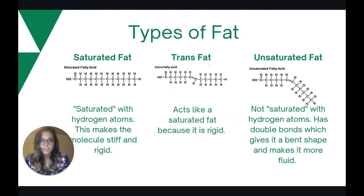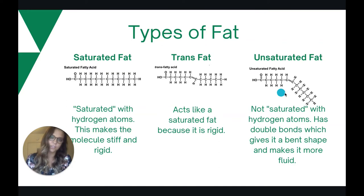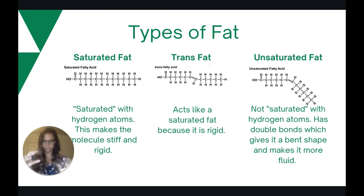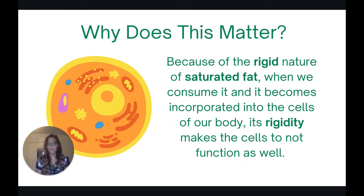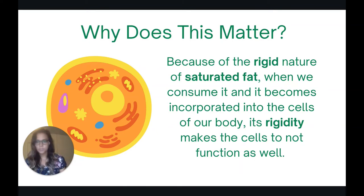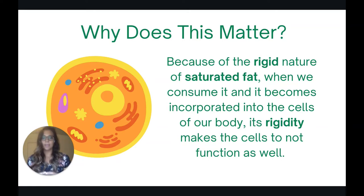Then we have unsaturated fat, and unsaturated fat means that not every available space has a hydrogen atom. There's a free space, and this allows the molecule to be more fluid and have a bent shape. Why does that matter? Because I want to highlight that it is the rigid nature of saturated fat — when we consume saturated fat, it becomes incorporated into our cells and our cell walls, and that rigidity makes cells not function as well.